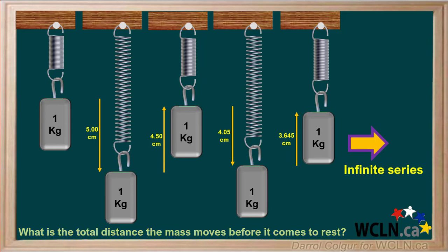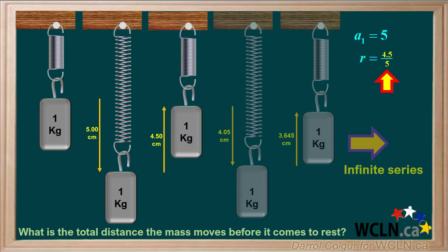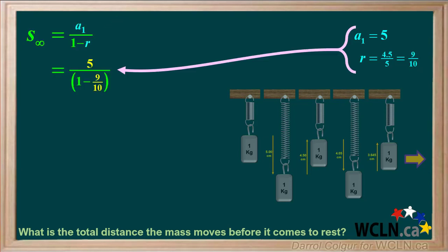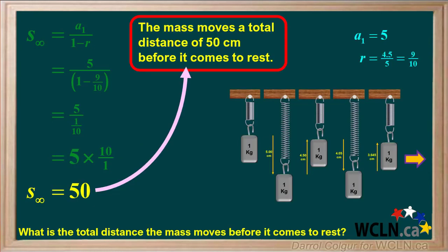Each movement of the mass can be represented as a term in an infinite geometric series. The first term, A1, is 5. And the common ratio is 4.5 over 5, which is equal to 9/10. Because R is between 0 and positive 1, this is a convergent series. We'll start with the equation for the sum of a convergent infinite series, then substitute 5 for A1 and 9/10 for R. 1 minus 9/10 is equal to 1/10. 5 divided by 1/10 is the same as 5 times 10, which is 50. So the mass moves a total of 50 cm before it comes to rest.